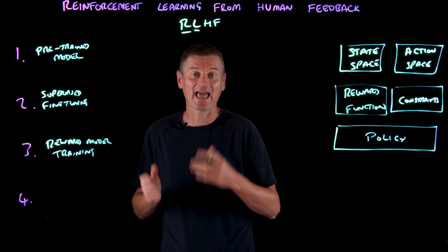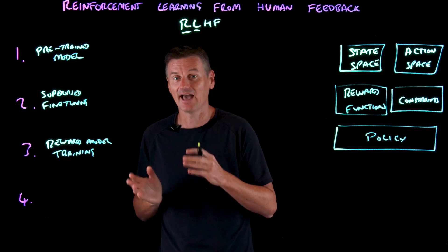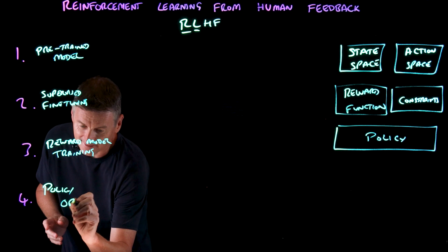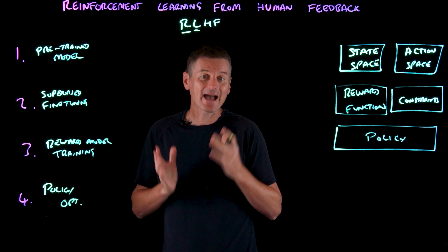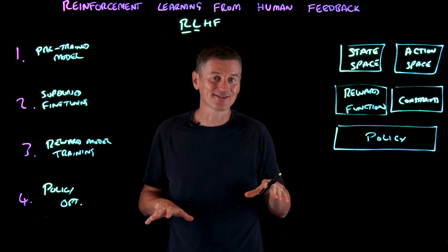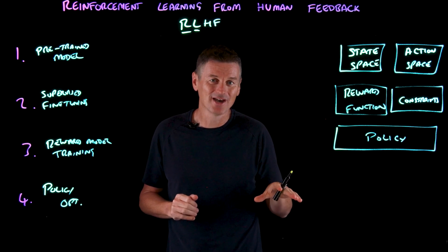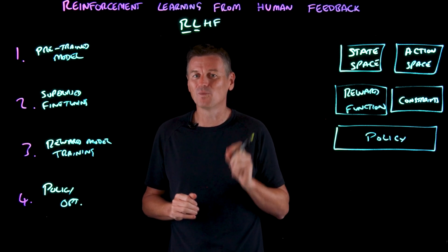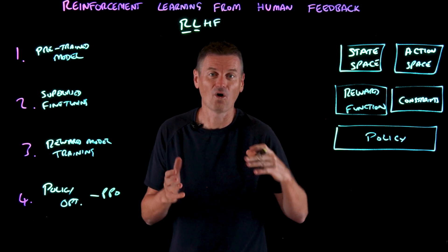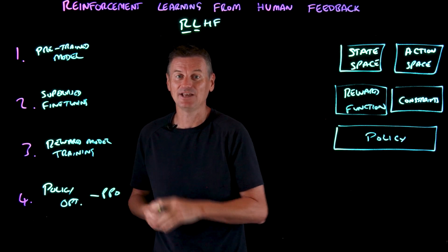The final hurdle of RLHF is determining how and how much the reward model should be used to update the AI agent's policy — that is called policy optimization. We want to maximize reward, but if the reward function is used to train the LLM without any guardrails, the language model may dramatically change its weights to the point of outputting gibberish in an effort to game the reward system. An algorithm such as PPO, or proximal policy optimization, limits how much the policy can be updated in each training iteration.